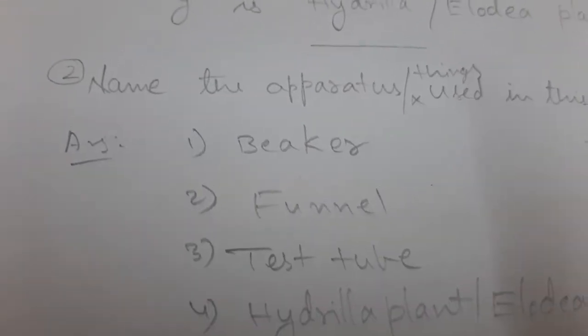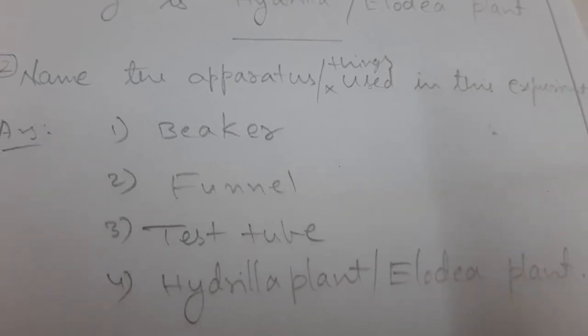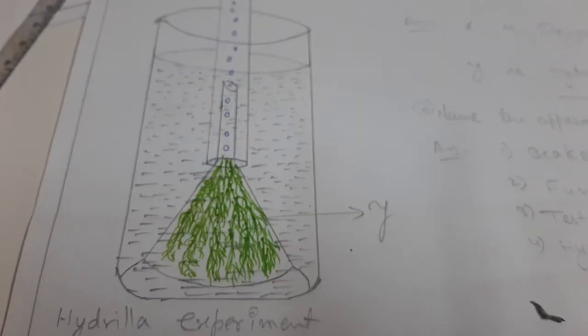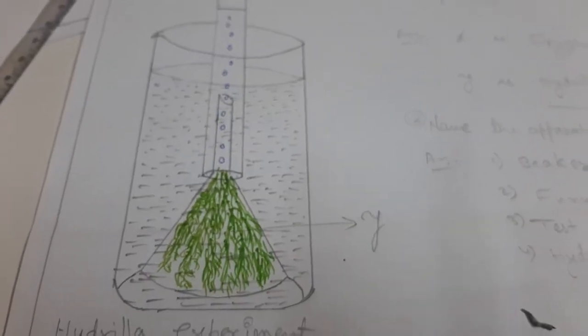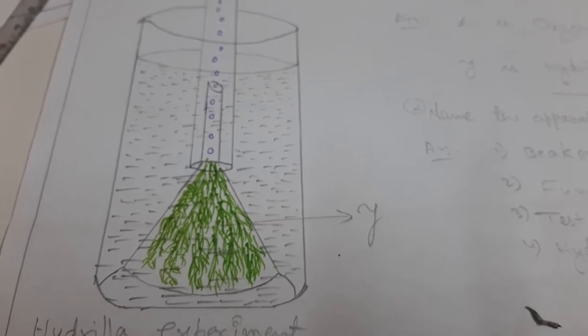Students, next question. Second question: name the apparatus or things used in this experiment. So observe this experiment. What are the apparatus? We used beaker.